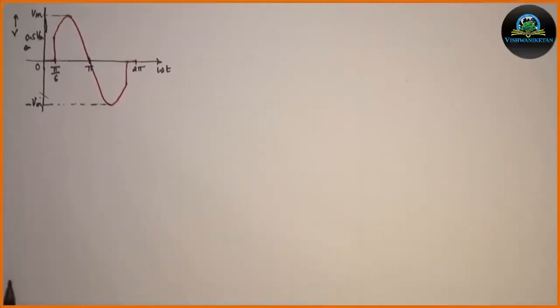From the given waveform we can observe that the waveform is symmetrical. Therefore average value is considered for only half cycle with duration of 0 to pi. Now the half cycle can be divided in two intervals with voltage equation.